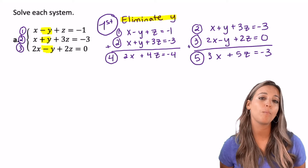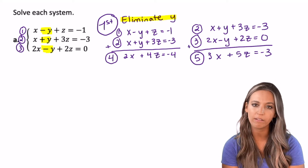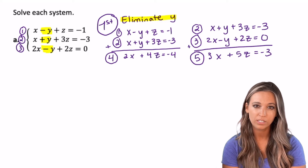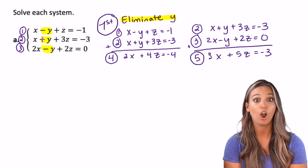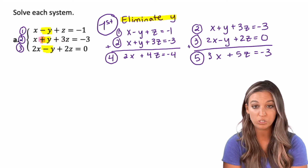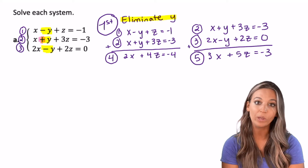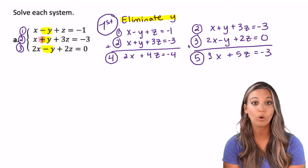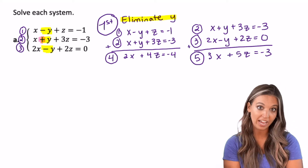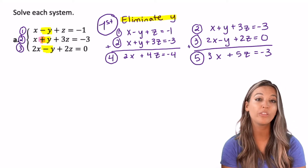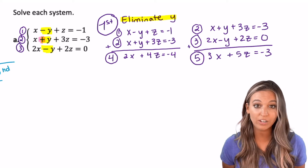Now that we've completed step one, do you understand why I chose to eliminate y? Looking at the original system, y had a leading coefficient of one all the way through and alternated signs between equations. Equations one and two paired perfectly with a positive y and a negative y, and equations two and three paired perfectly as well — so they just added right out.